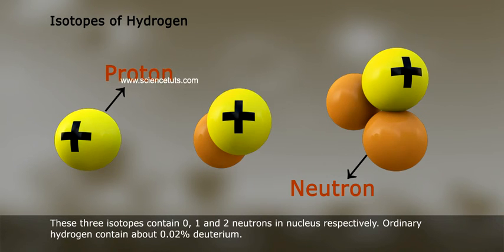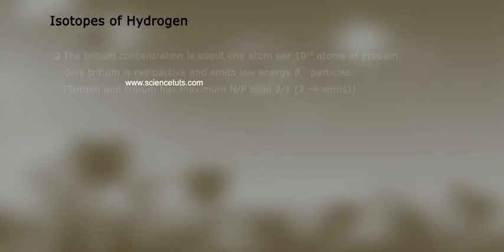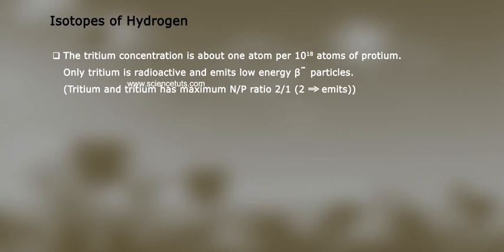Ordinary hydrogen contains about 0.02% deuterium. The tritium concentration is about one atom per 10¹⁸ atoms of protium. Only tritium is radioactive and emits low energy beta particles.